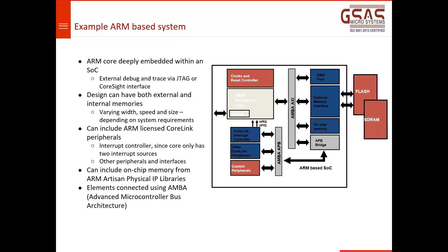In ARM, each interrupt or exception mode has its own stack pointer and link register. In FIQ mode, there are dedicated registers R7 to R12, which is why it is called 'fast' — when the processor enters FIQ mode, those register sets don't need to be pushed or popped from the stack, saving approximately 46 cycles of overhead.